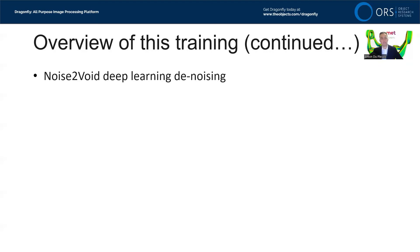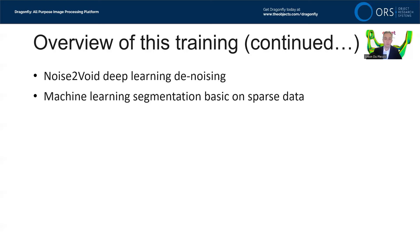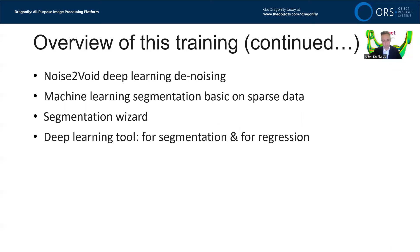The first deep learning tool is Noise2Void, a denoising tool, which I'll demonstrate on some noisy data. Then we'll move to machine learning segmentation — the most basic machine learning tools using sparse data, meaning very limited labeling. Then the segmentation wizard, which makes deep learning simple by testing multiple models on your data to see what works best. Then the classical deep learning tool, both for segmentation and regression — for segmenting data as well as image processing or denoising. Finally, we'll show the video maker for creating nice videos of your segmentations.